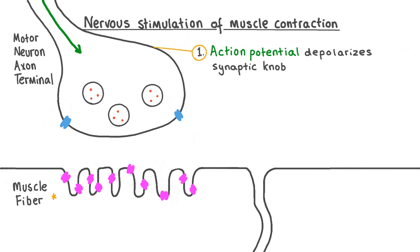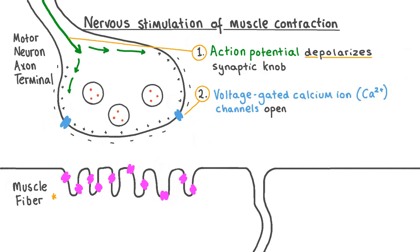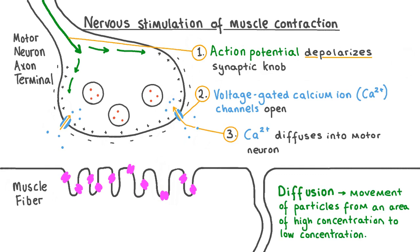When an action potential arrives at the synaptic knob of a motor neuron axon terminal, it depolarises it. In its resting state the inside of the motor neuron is more negatively charged than the outside. Depolarisation flips this distribution of charge so the inside becomes more positively charged than the space outside. This causes voltage-gated calcium ion channels embedded in the presynaptic membrane to open, and calcium ions diffuse into the motor neuron from the synaptic cleft, where their concentration is higher, into the motor neuron axon terminal by passive diffusion.